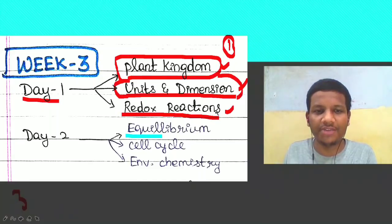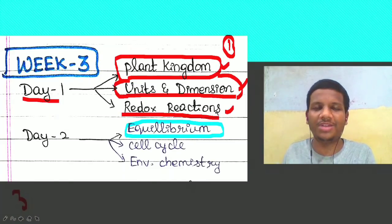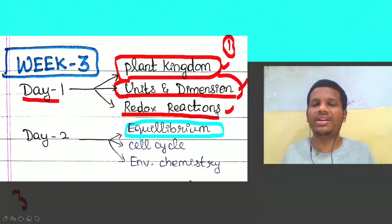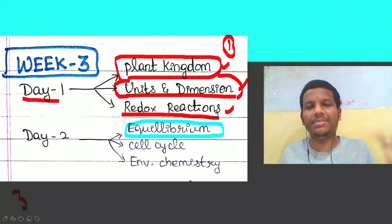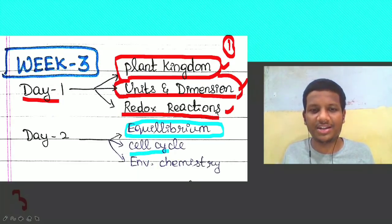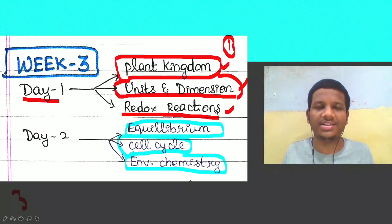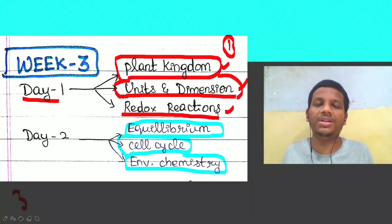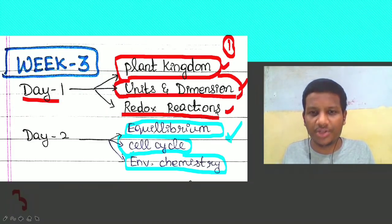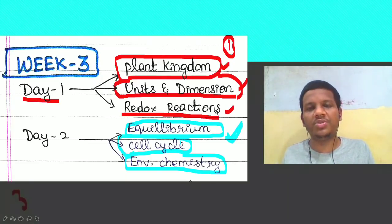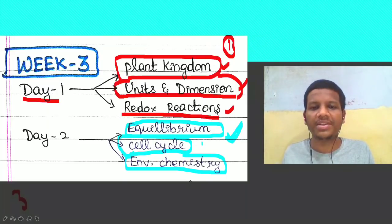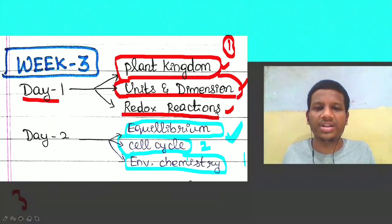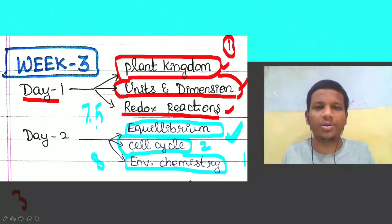On day 2, we have 3 chapters. First is Equilibrium — both chemical and ionic — which is the most important topic. Handwritten notes are available in the app. Next is Cell Cycle and Cell Division, which you can download from the study materials on the channel. Third is Environmental Chemistry — not a big chapter, very easily studyable. Based on previous question analysis, give at least 5 hours to Equilibrium, 2 hours for Cell Cycle, and about 1 hour for Environmental Chemistry, totaling around 8 hours for day 2.